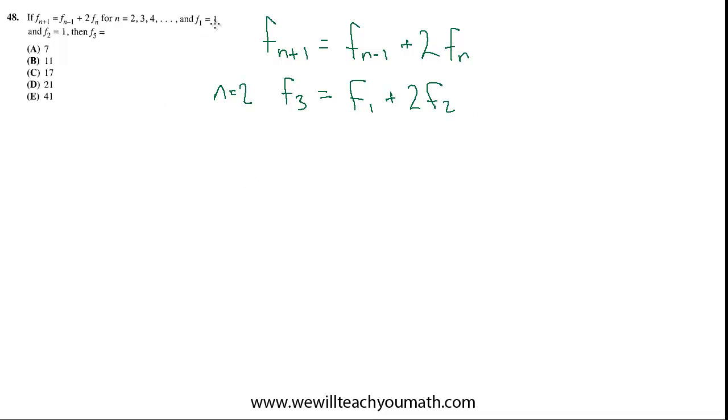Now, let's apply it. We've also been told the values of the first two terms, right? The first term, f1 is 1, and f2 is also 1. And they want us to find f5. Now, we could spend time trying to figure out a general way, but since they only want the fifth term, the fastest way is probably just to find the third and then the fourth and then the fifth.